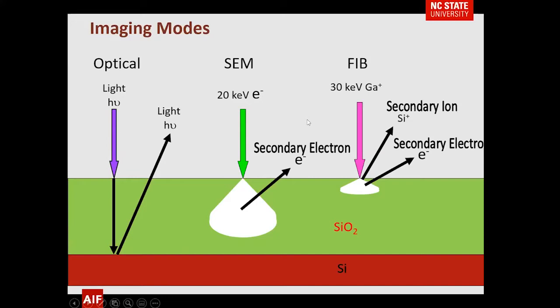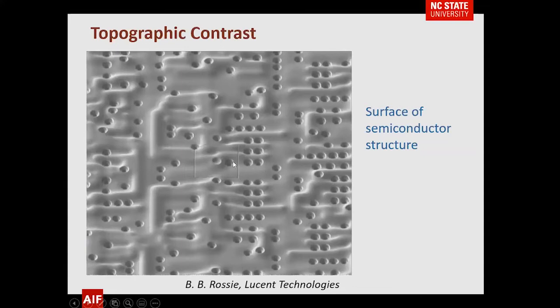Here's an example of topographic contrast, very similar to what you have in SEM. You can tell from this semiconductor structure that features are either innies or outies — you're getting some idea of the topography just from taking the image.